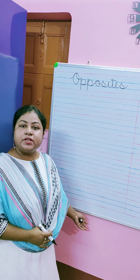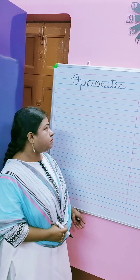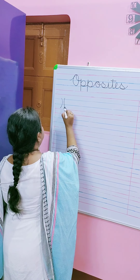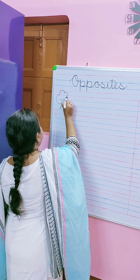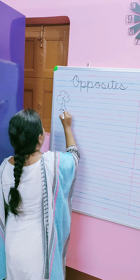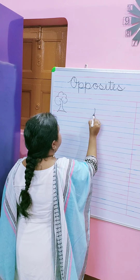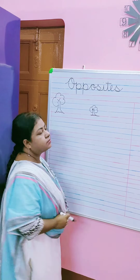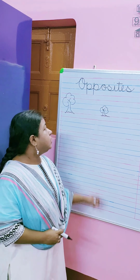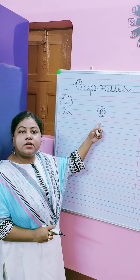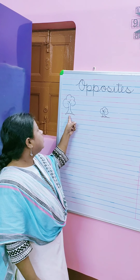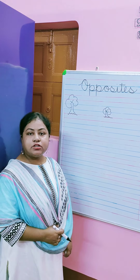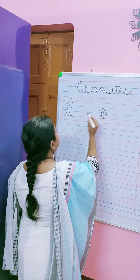I will draw a few pictures and I will explain to you. Children, you can see there are two trees. The difference is this one is a tall tree and this one is a short tree. So I will write tall and short.